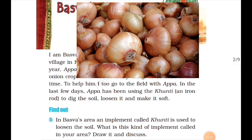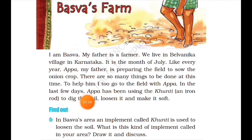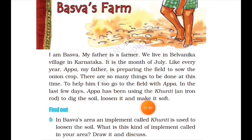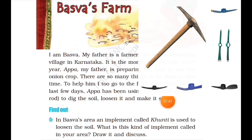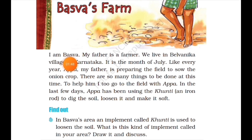Before sowing the onion crops, there are so many things to be done. To help him, I go to the field with Appa. In the last few days, Appa has been using the Kunti — an iron rod — to dig the soil, loosen it, and make it ready for sowing. The boy Basfa helps his father in his field work.